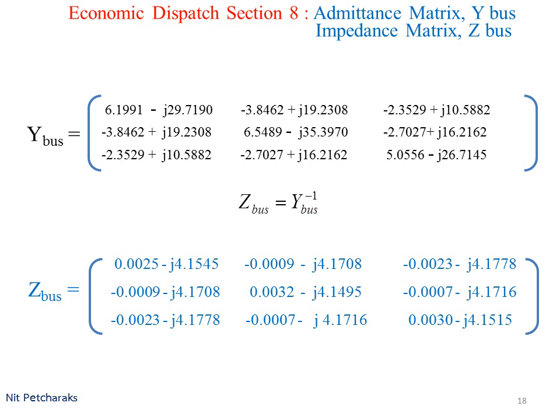In general, Y bus is used in power flow calculation, whereas bus impedance matrix is used in fault current calculation.